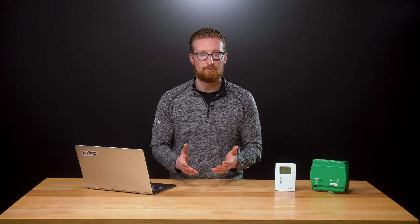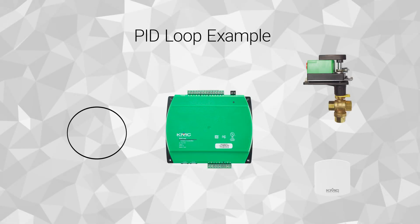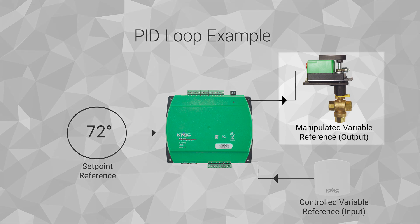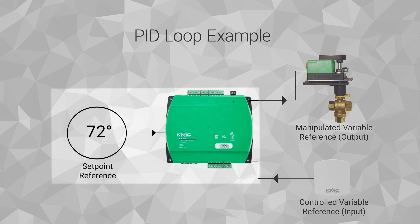Let's look at a BACnet control loop that is typically found in a fan coil unit. In this loop, zone temperature is controlled with a valve that is opened or closed to change water flow through a coil. Air flowing through the coil is warmed or cooled to raise or lower the temperature in the room or zone. The zone set point is represented by the BACnet loop object's set point reference property and is fixed within the controller at 72 degrees.